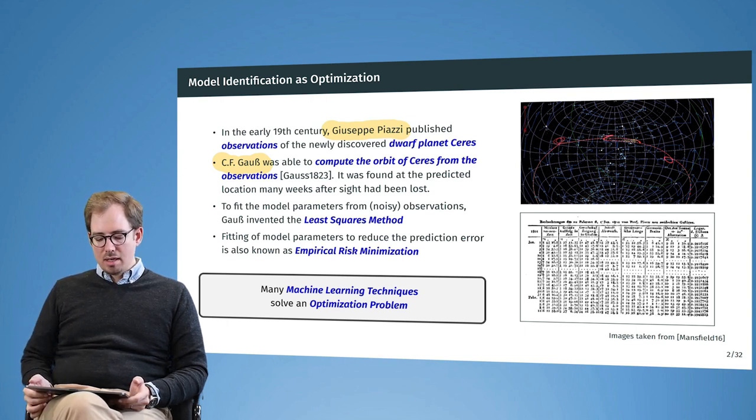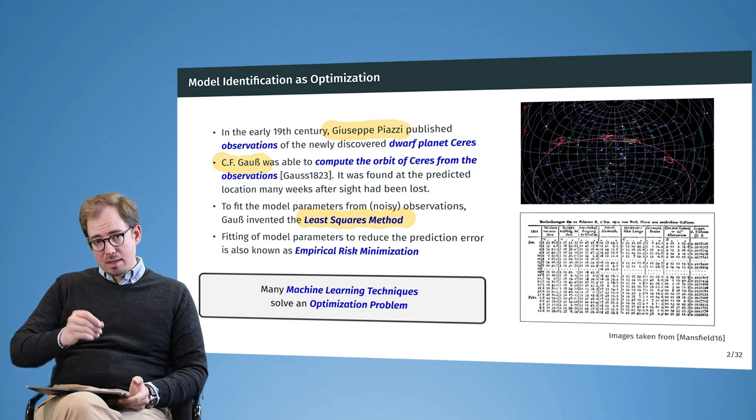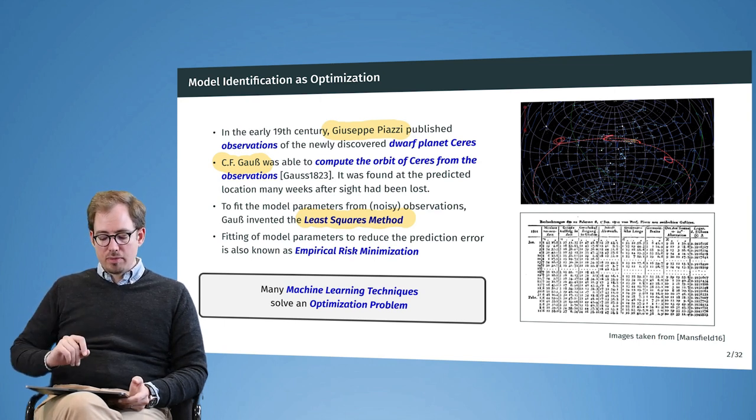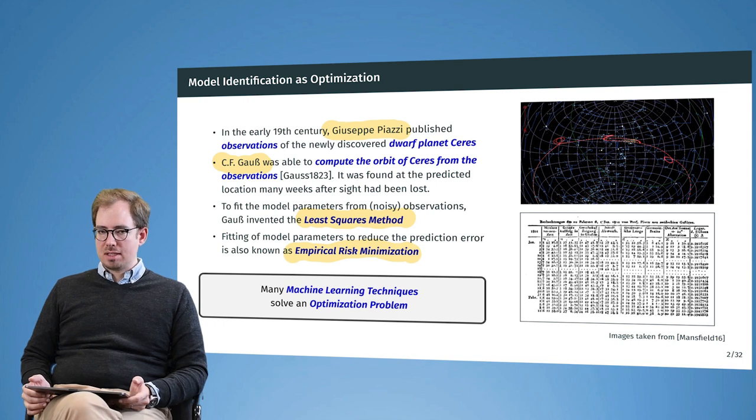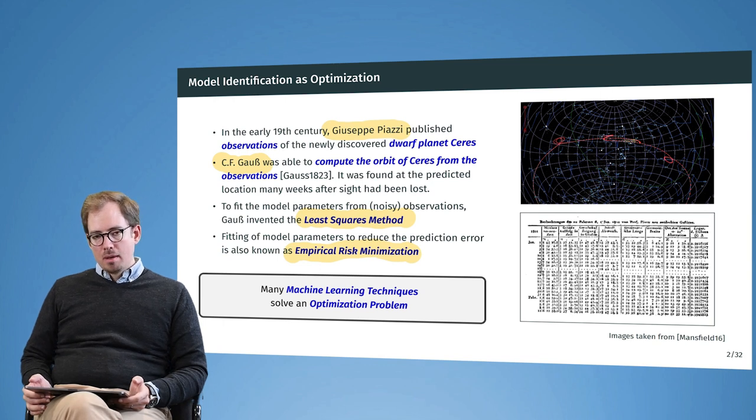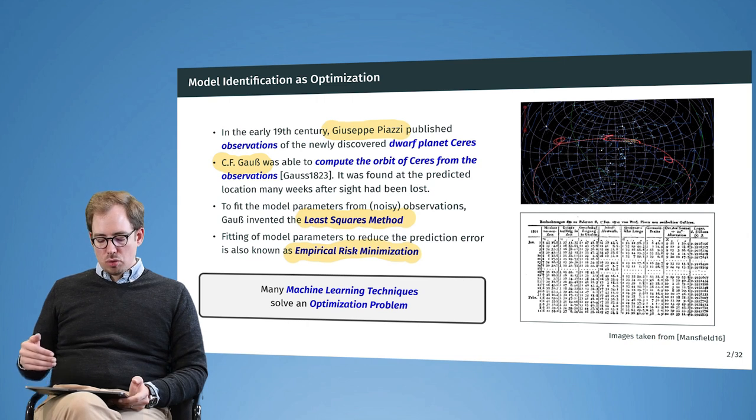Gauss actually was able to do the calculations to fit a model onto these noisy observations. For this he invented a method that we call today the least squares method, and this is an important tool in optimization.